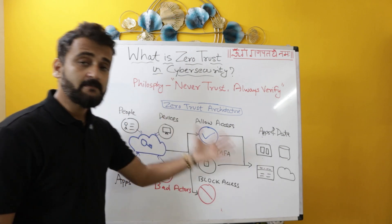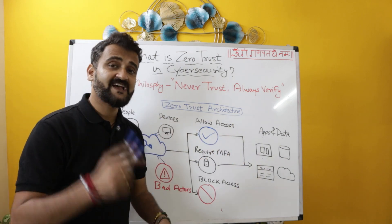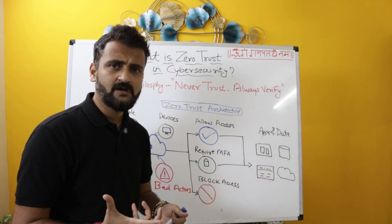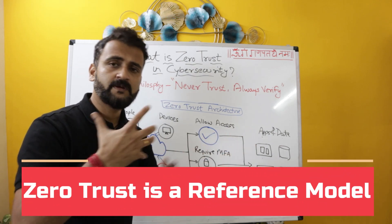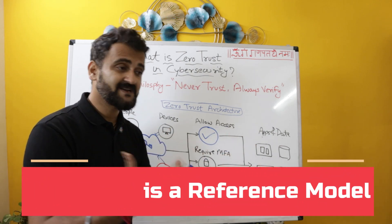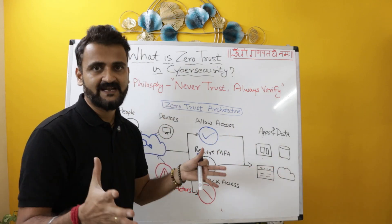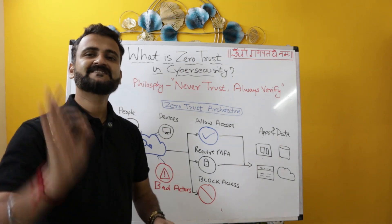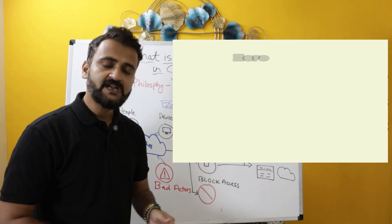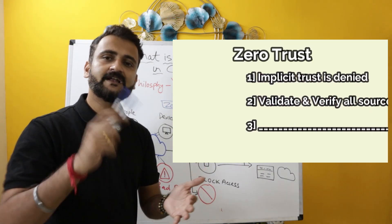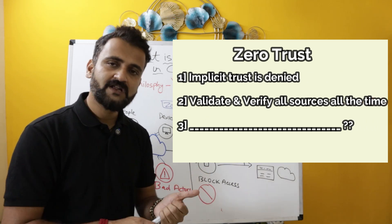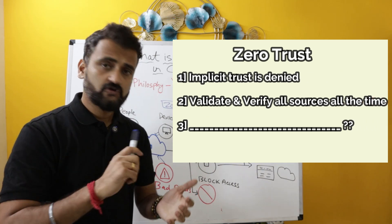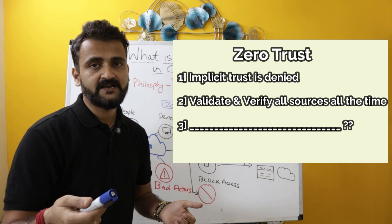But access is not permanent — every time you request these resources, it follows the zero trust model. It is a reference model and everyone can implement it based on their principles, but there are certain guidelines to follow. Zero trust says implicit trust is always denied. Secondly, you have to validate and authenticate all users, all devices, all applications, all the time.